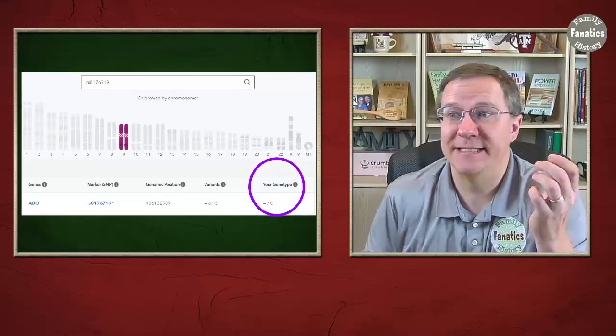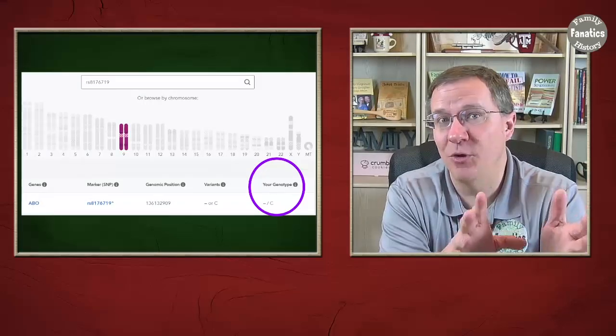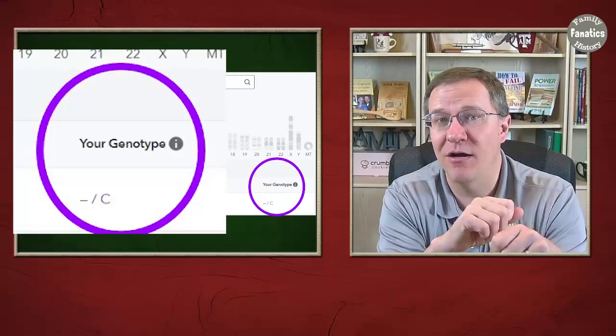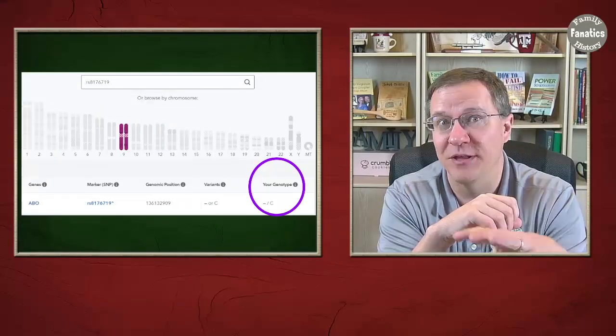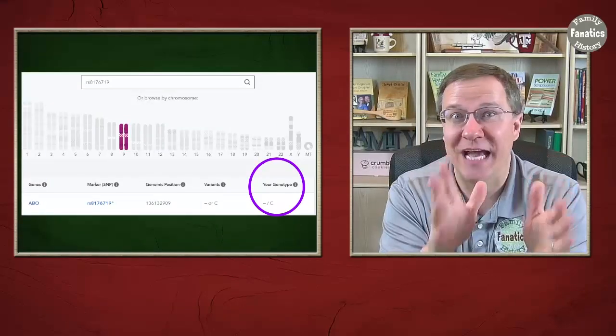I can see here this same location on a different person. They are a dash and a C. That dash means a deletion—a letter that's not there that should be there. So that's what their genotype is.